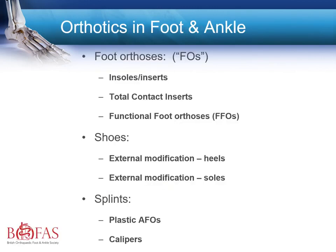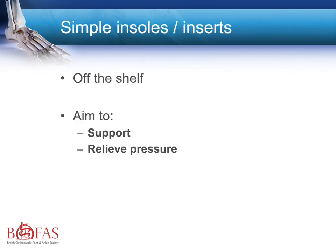Let's consider the full range of orthotics used in the foot and ankle. Foot orthoses or FOs can be simple insoles, total contact inserts, or more functional foot orthoses. Shoes can have external modifications to the heel or sole, and splints can be applied in either the traditional caliper design or a more plastic lightweight air foam. Simple off-the-shelf lightweight insoles can provide some support and relieve some pressure; however, because of their softness, they provide very minimal biomechanical support and can only be used for fairly mild deformities.